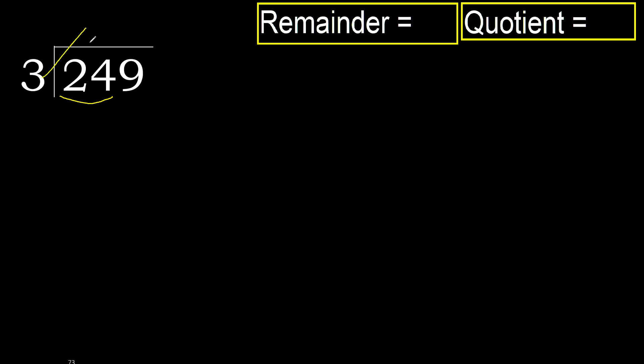3 multiplied by which number is nearest to 24 but not greater? 3 multiplied by 9 is 27 — 27 is greater. 3 multiplied by 8 is 24, which is not greater.